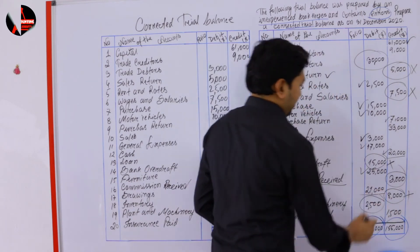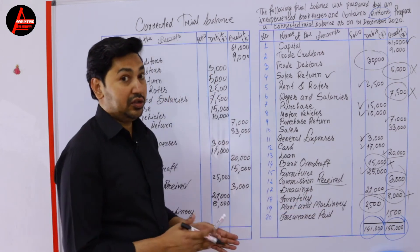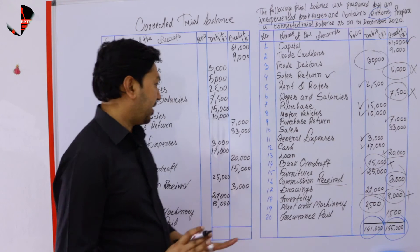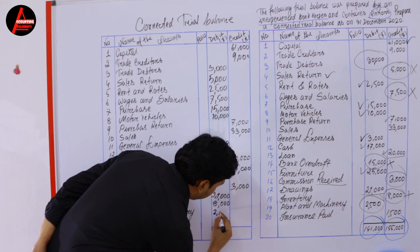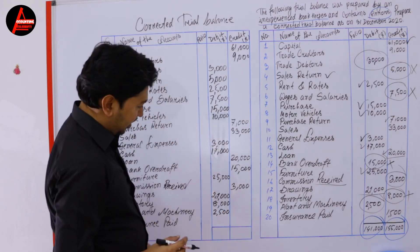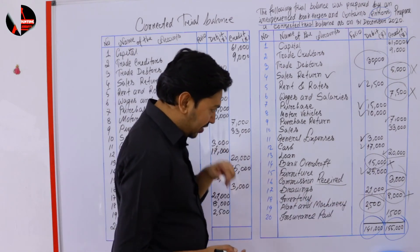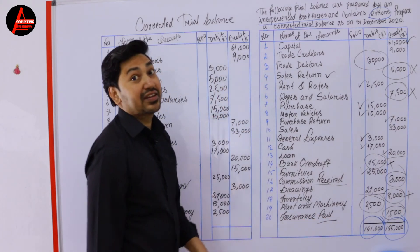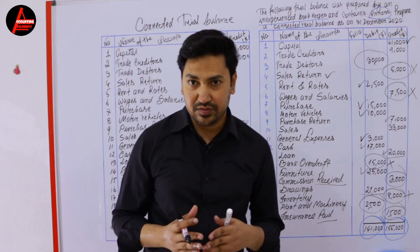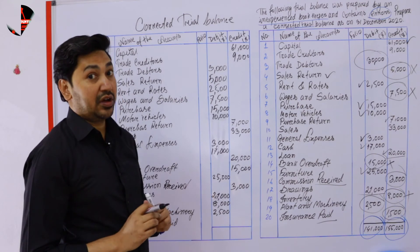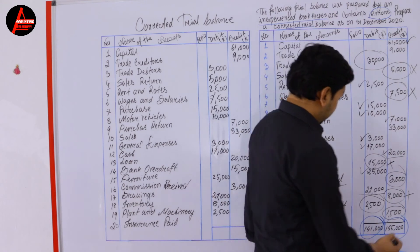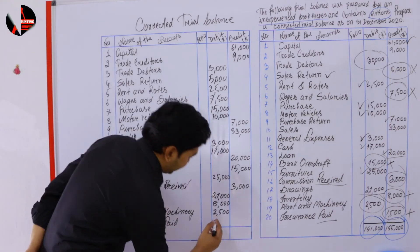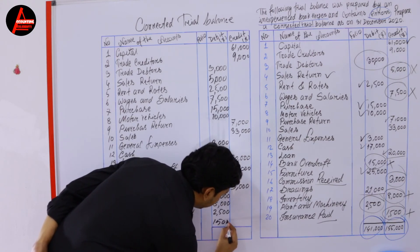Next is plant and machinery — this is another type of asset, a non-current asset. Non-current asset comes on the debit side, and it is also written on the debit side here, so it is fine. Write on the debit side: 2,500 dollars. The last item is insurance paid: 1,500 dollars. Look at the word 'insurance paid' — you paid, meaning it is an expense. Money goes out for the business. Expense is always debited. But this bookkeeper wrote it on the credit side, which is not correct. Write it on the debit side because it is an expense: 1,500 dollars.